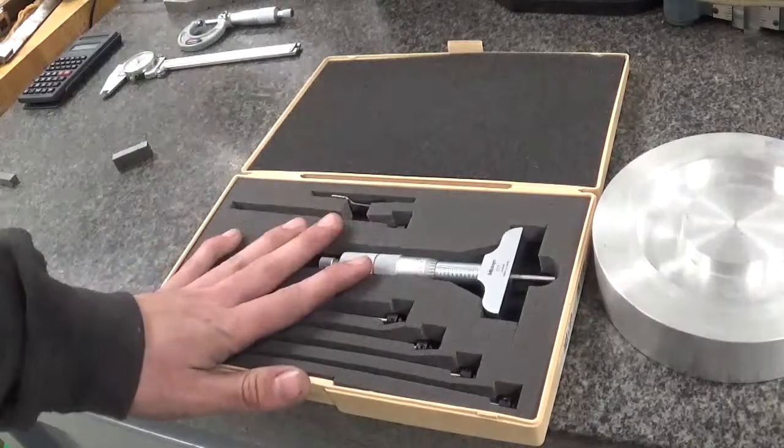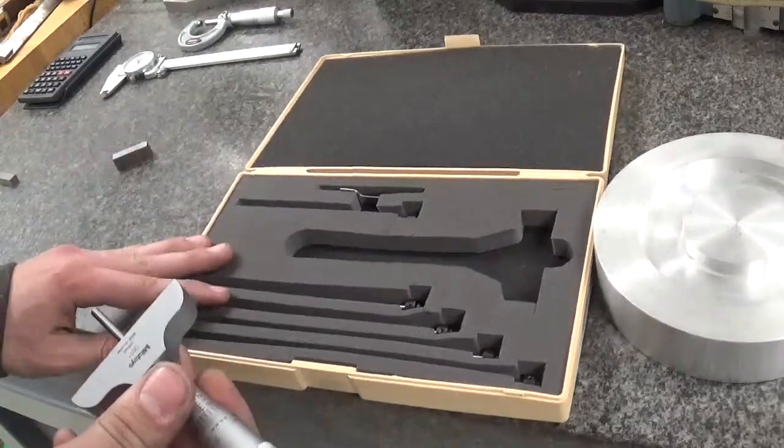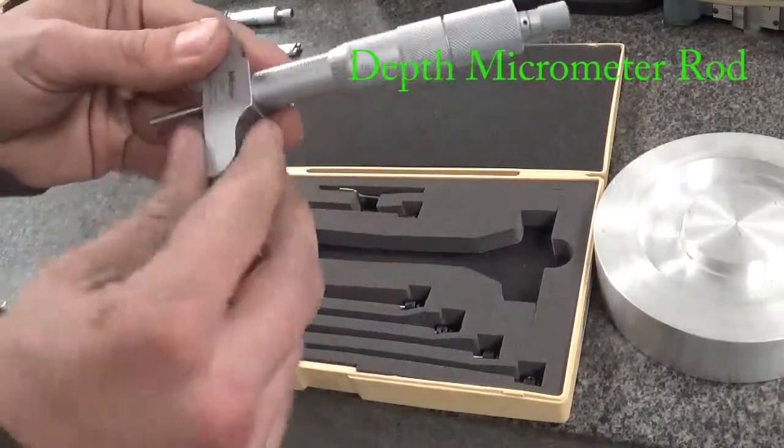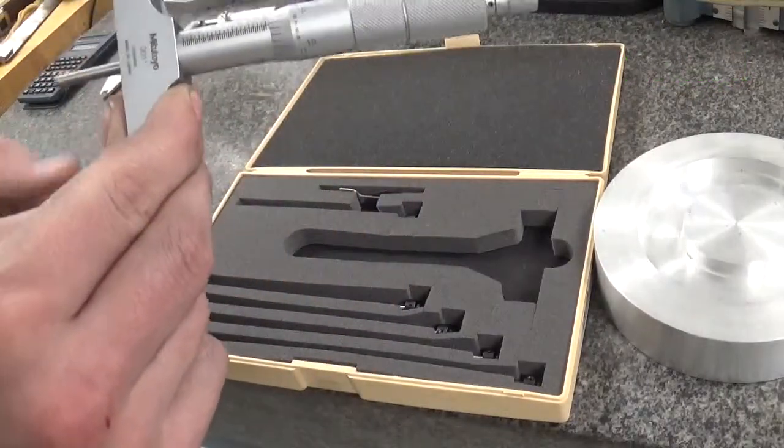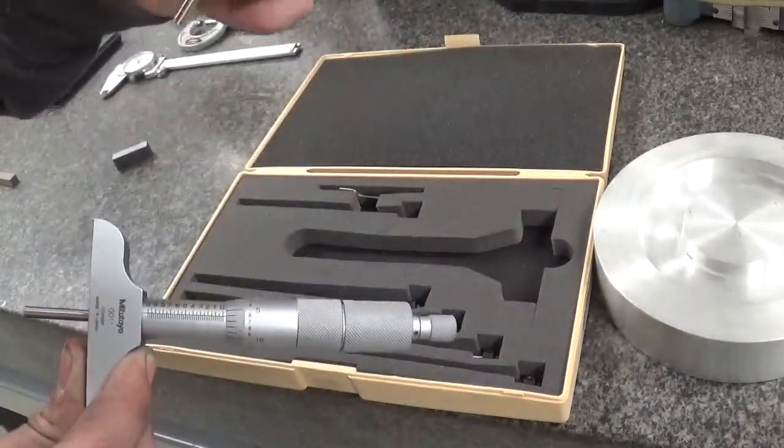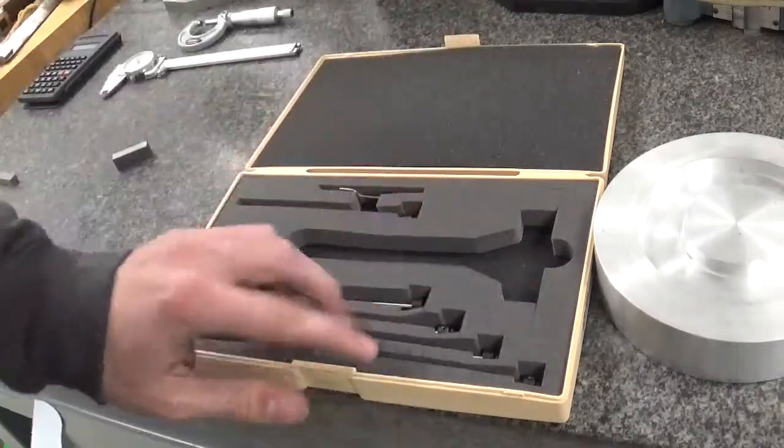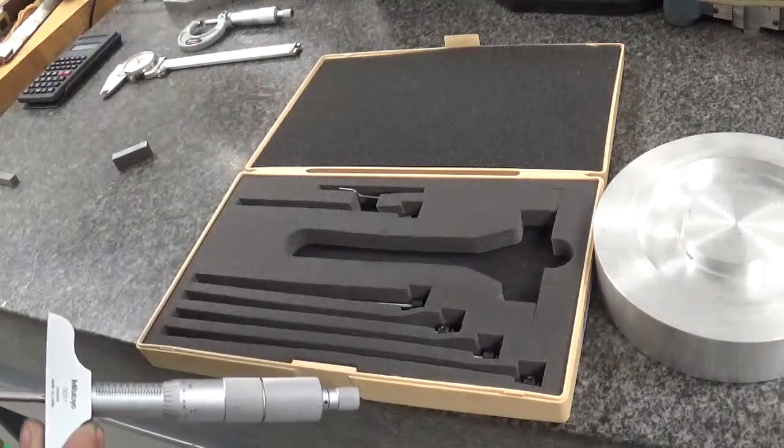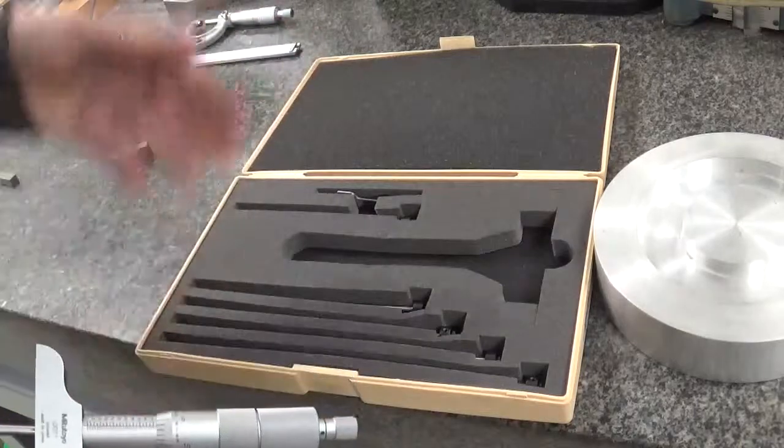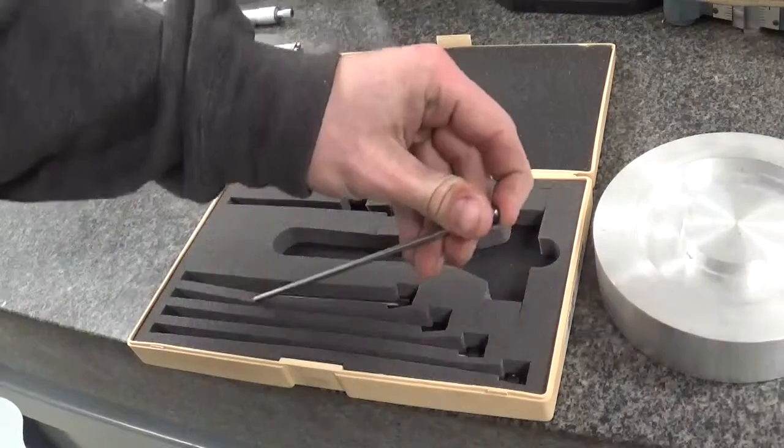Here we have a case for our depth micrometer. It's pretty cool—we have different depth mic rods in here. Right now currently I have this depth mic set up to measure anything from 1 to 2 inches. You have other ones—here's my 0 to 1 inch, 2 to 3 inches, and so on. It goes all the way up to 6 inches. So for example, if you're measuring a depth where you know it's going to be right around 3.5 inches, you want to grab your 3 to 4 inch depth mic rod.